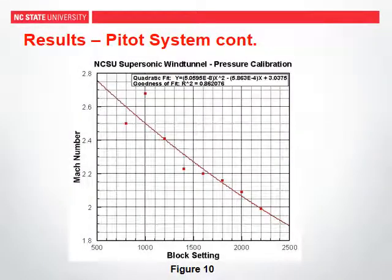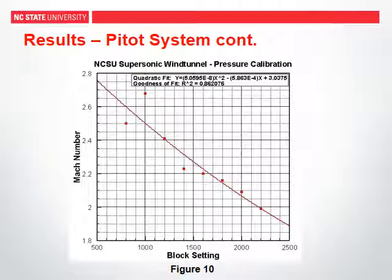The Mach numbers at different block settings based on the differential pressure are plotted again in figure 10, where a quadratic line of best fit is used. Once again, the R-squared value is approximately 0.86, giving a nearly identical representation of the data as the previous plot.